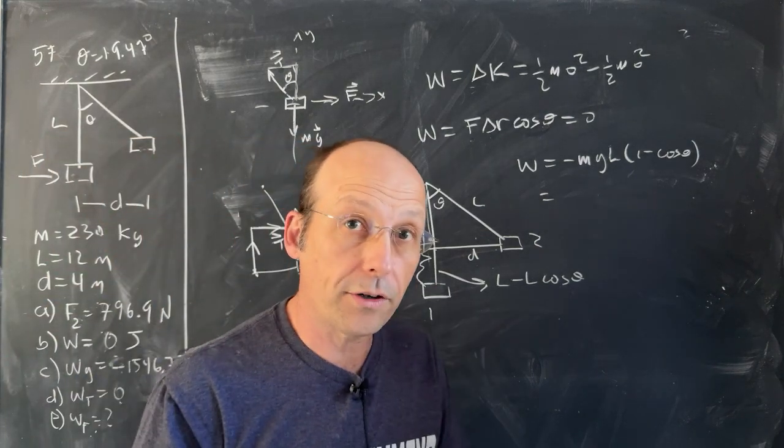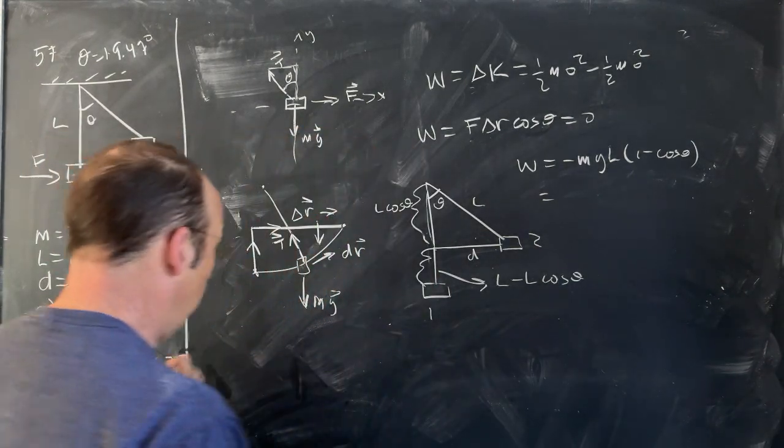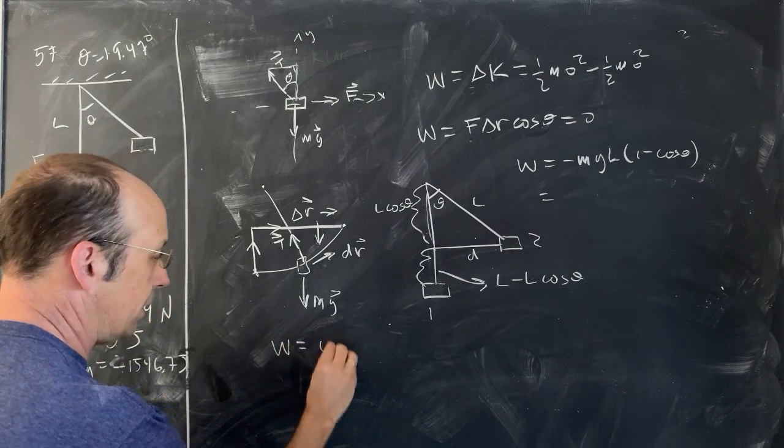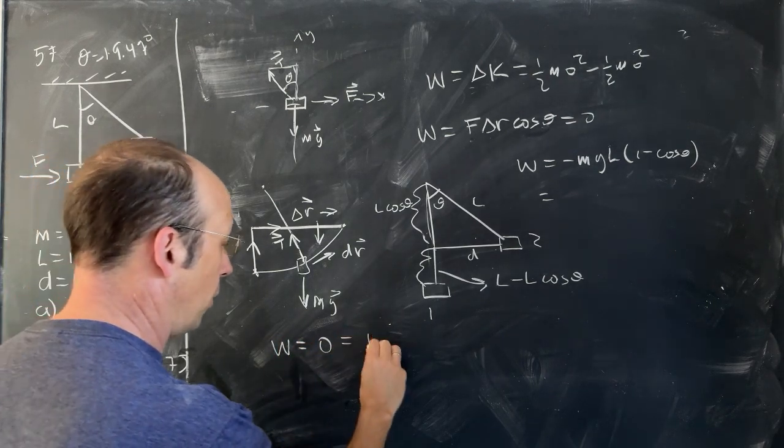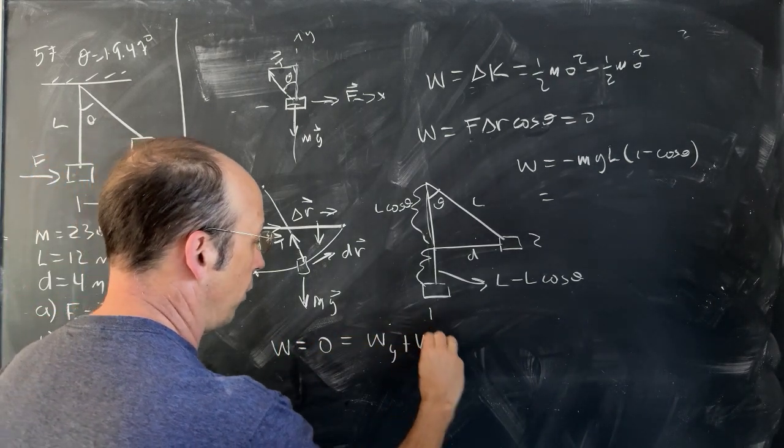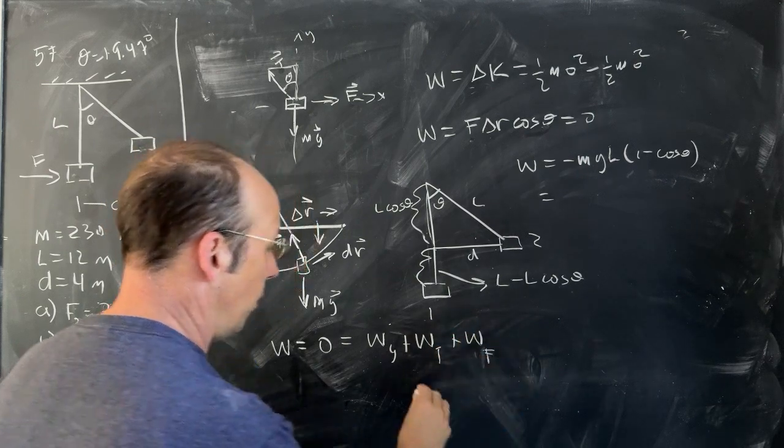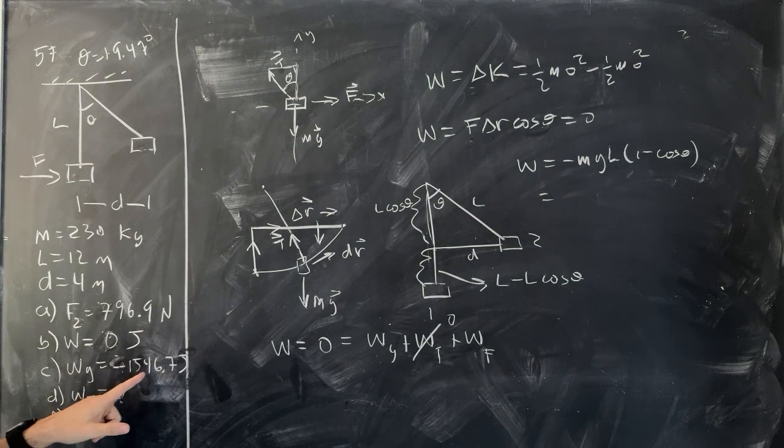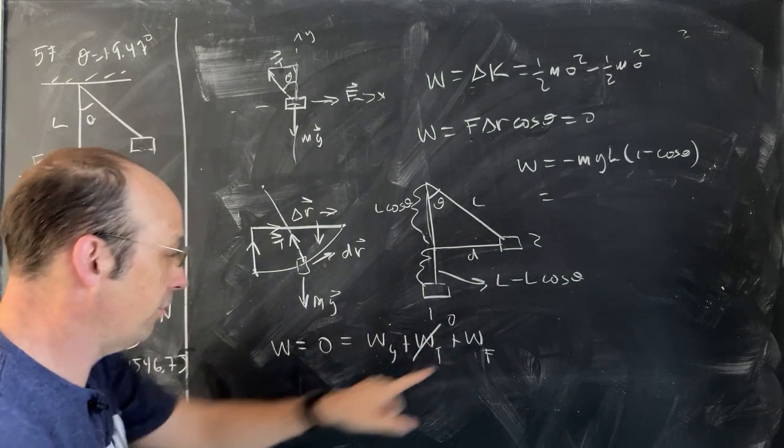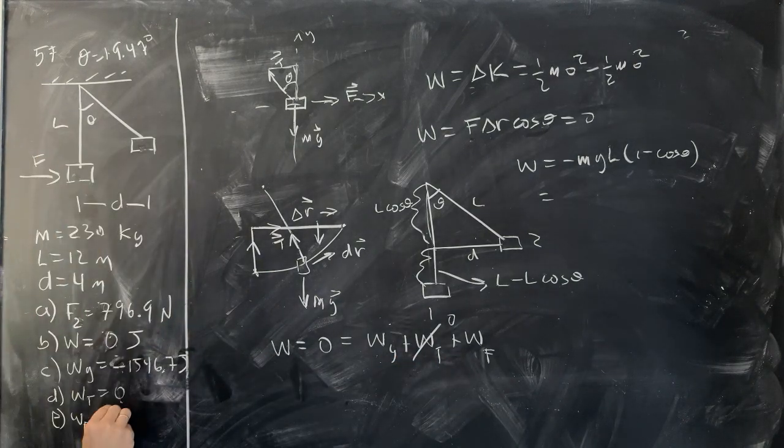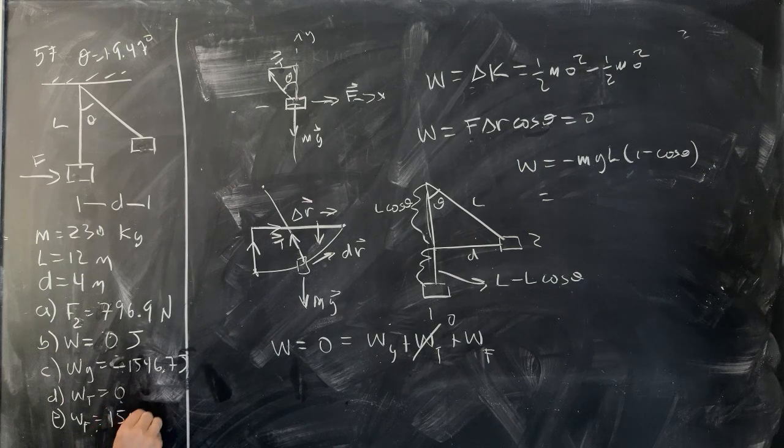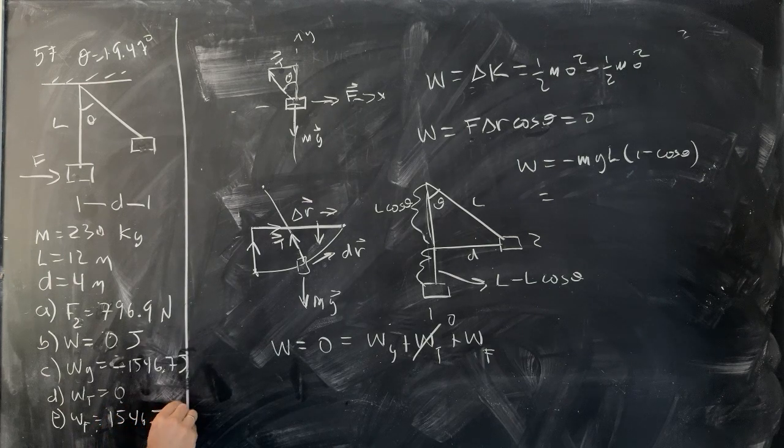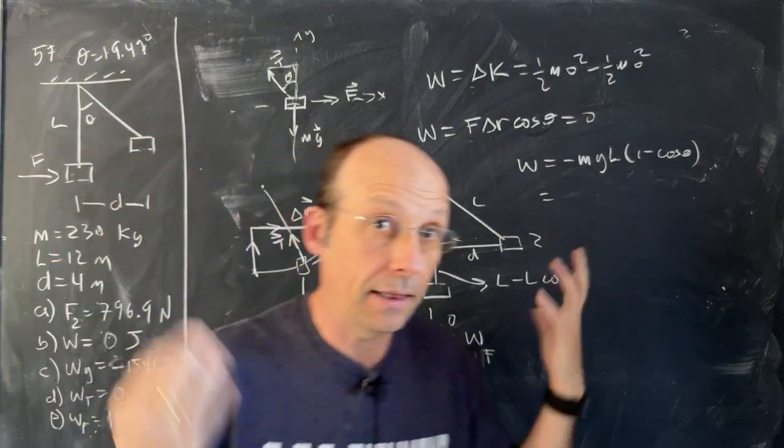Finally, what's the work done by the force? Well, the total work is zero, and that's going to be equal to the work done by gravity, plus the work done by the tension, plus the work done by the force. Well, that's zero. I know that. Negative 1546.7. So this is going to be the opposite of that. So it's 1546.7 joules positive. And that's it.